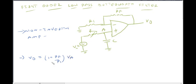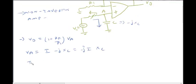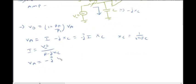So V0 — it is nothing but current into impedance, minus j·Xc. Current I is going to equal voltage divided by total resistance. So I equals VI divided by total R minus j·Xc. Xc equals 1 divided by 2π·F·C. Substituting, VA equals VI into Xc divided by R minus j·Xc.